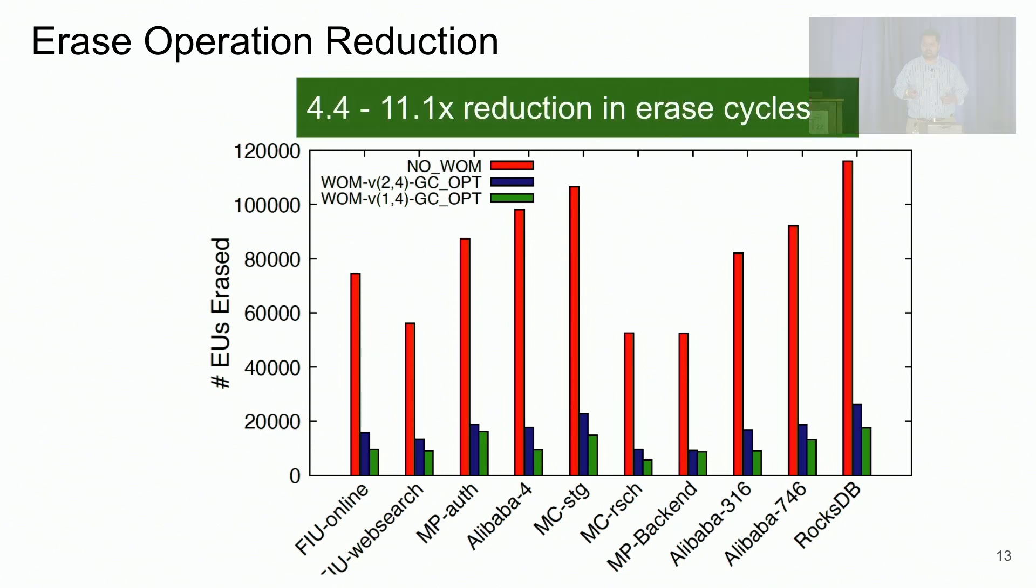Overall, we see that across all workloads, we are able to get up to 4 to 11x reduction in erase cycles using WOM V codes.